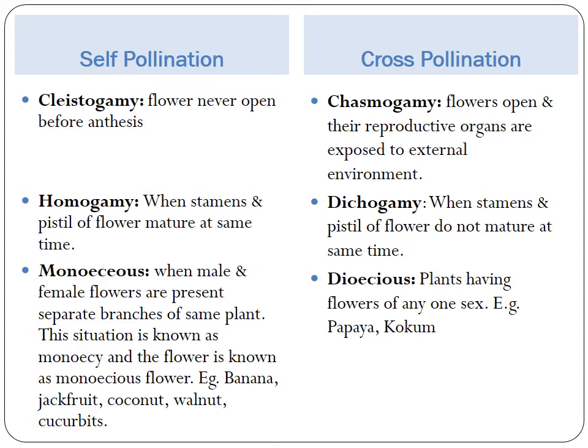Monoecious plants usually are self-pollinated, where male and female flowers are present on separate branches of the same plant. Examples include banana, jackfruit, coconut, walnut, cucurbits, etc. Whereas dioecious plants usually have cross-pollination, where male and female flowers are present on different plants, meaning one plant will have only one sex of flower. Examples are papaya and kokum.